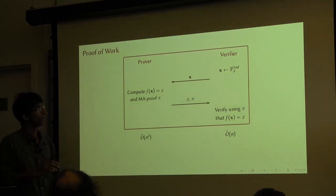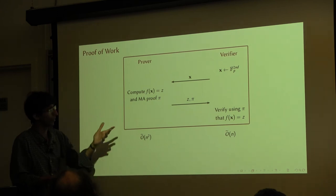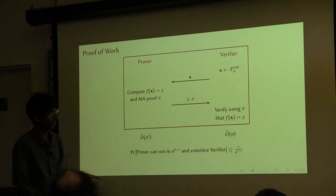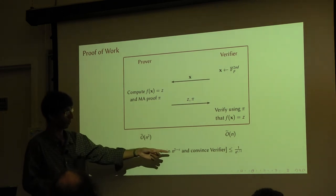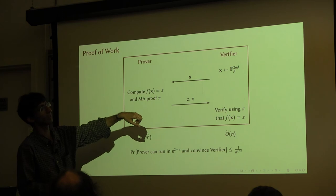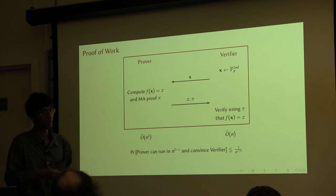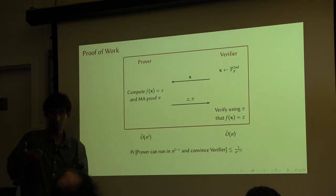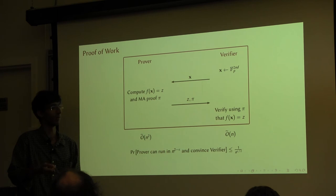If orthogonal vectors takes n-squared time, then evaluating this polynomial takes n-squared time. If the orthogonal vectors conjecture is true — that it actually takes almost quadratic time — then if the prover runs in time n to the 2 minus epsilon, the probability that this whole thing succeeds is like 1 over n to the epsilon over 2. This says that if the prover actually makes the verifier accept, then it has proven on average that it has worked for n-squared time, putting in n-squared steps of computation. This is what you refer to as a proof of work.